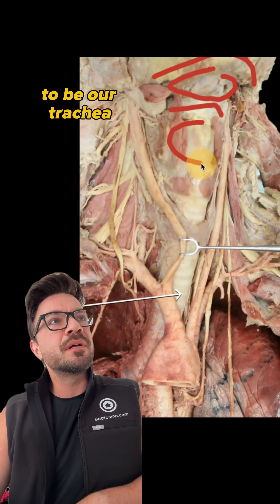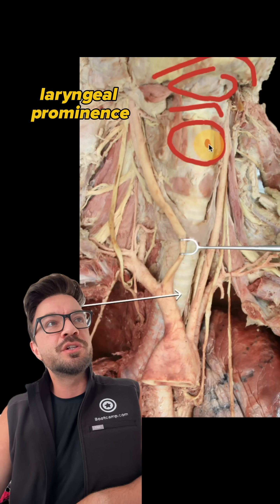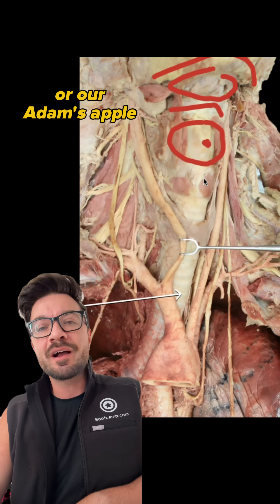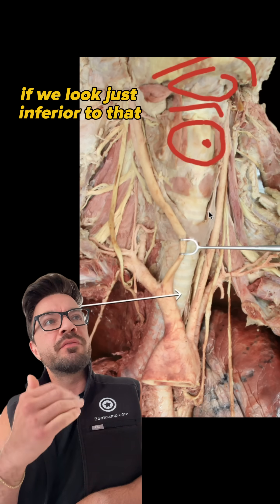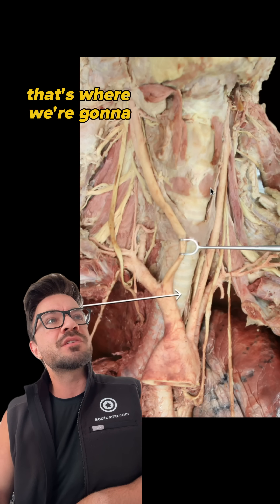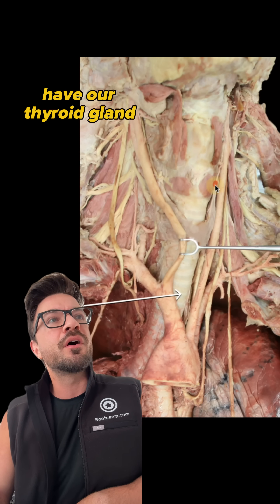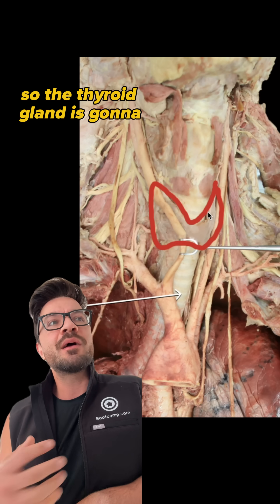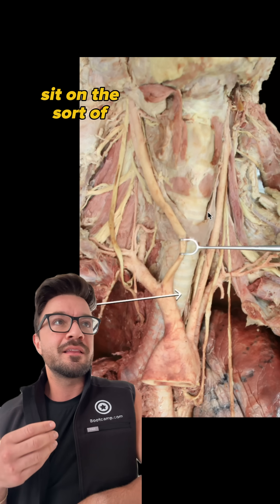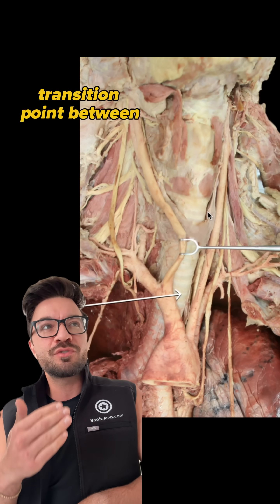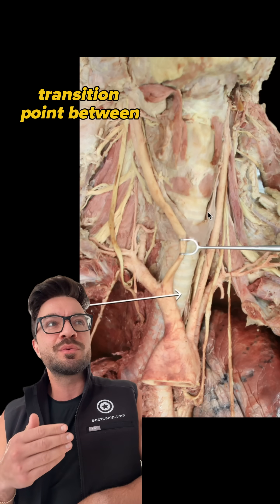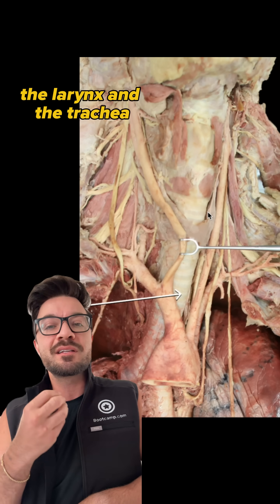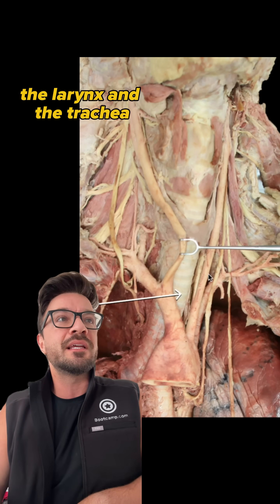This right here is going to be our trachea with our laryngeal prominence, or our Adam's apple. If we look just inferior to that, that's where we're going to have our thyroid gland right here. The thyroid gland sits at the sort of transition point between the larynx and the trachea.